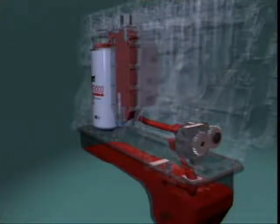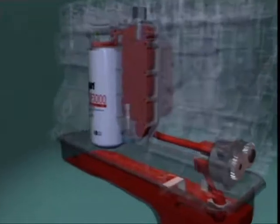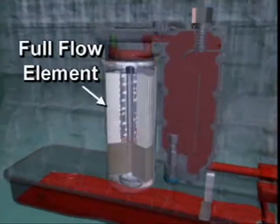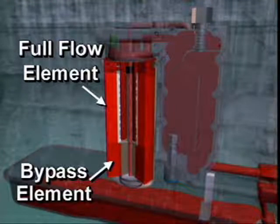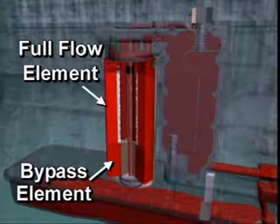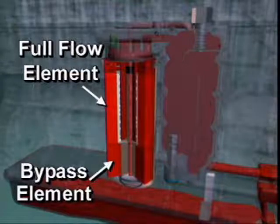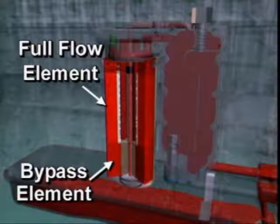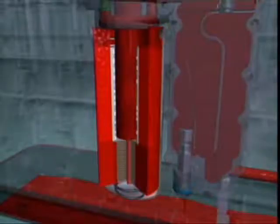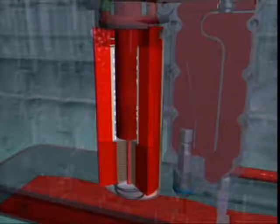A combination oil filter is used on these engines. The upper section of the filter contains the full flow filter element, while the lower section contains the bypass element. Oil passing through the full flow portion of the oil filter flows to the main oil rifle. Oil flowing through the bypass portion of the filter returns to the inlet side of the oil pump. During normal engine operation, oil circulates through the full flow section of the combination filter and into the main oil rifle.